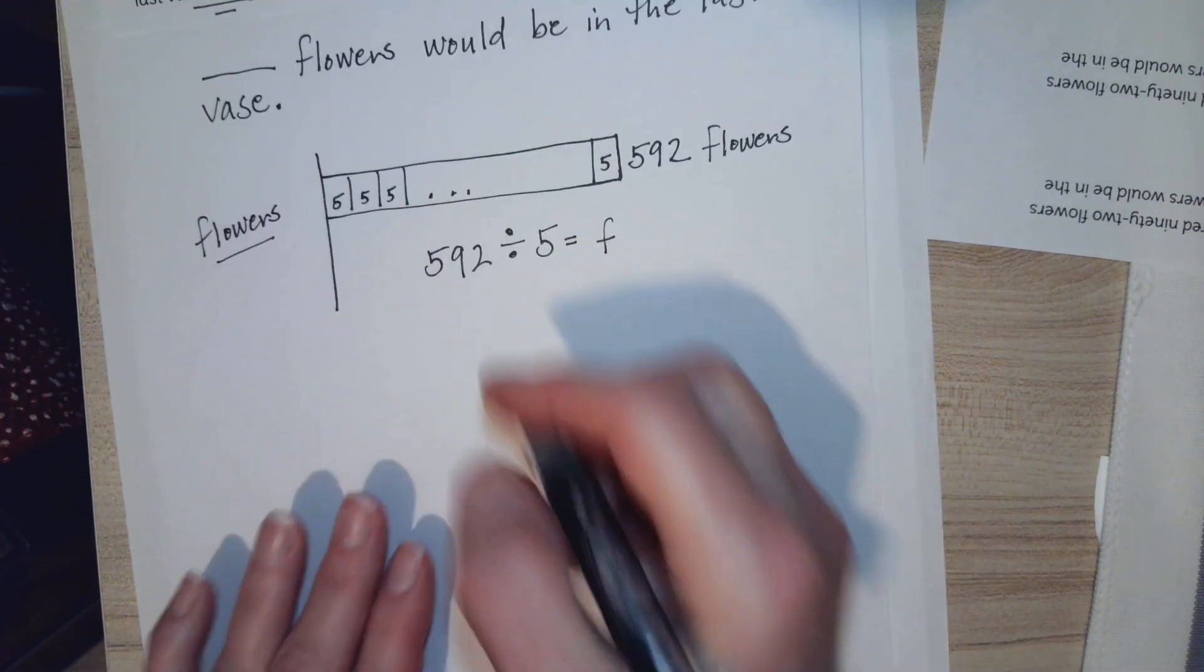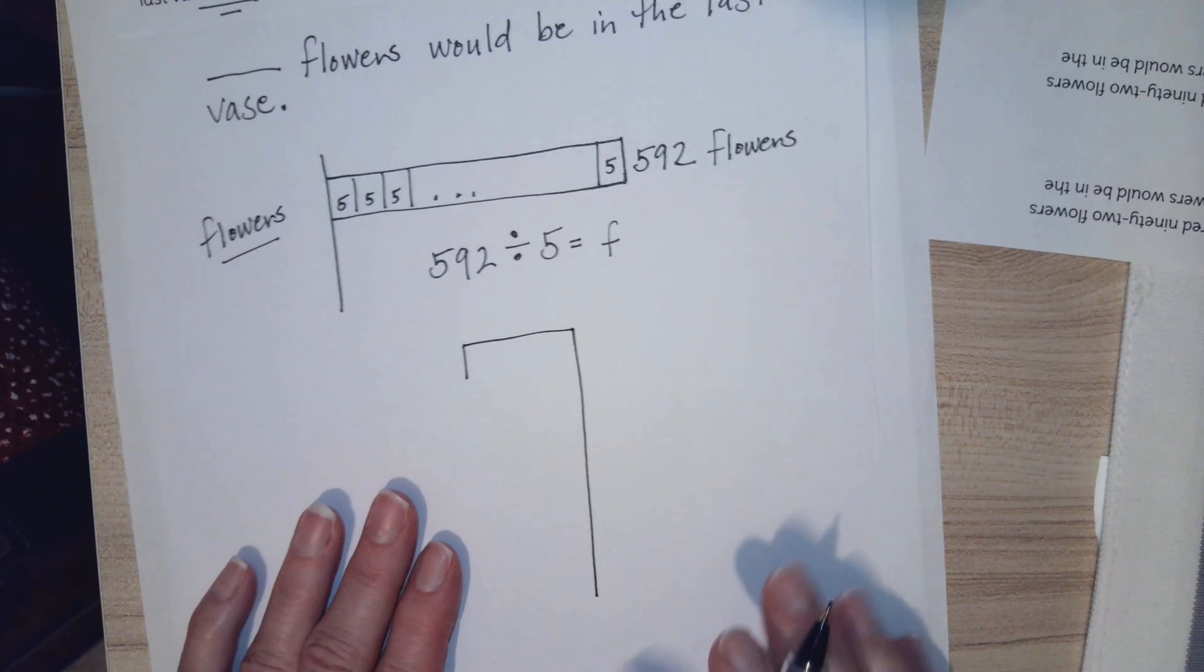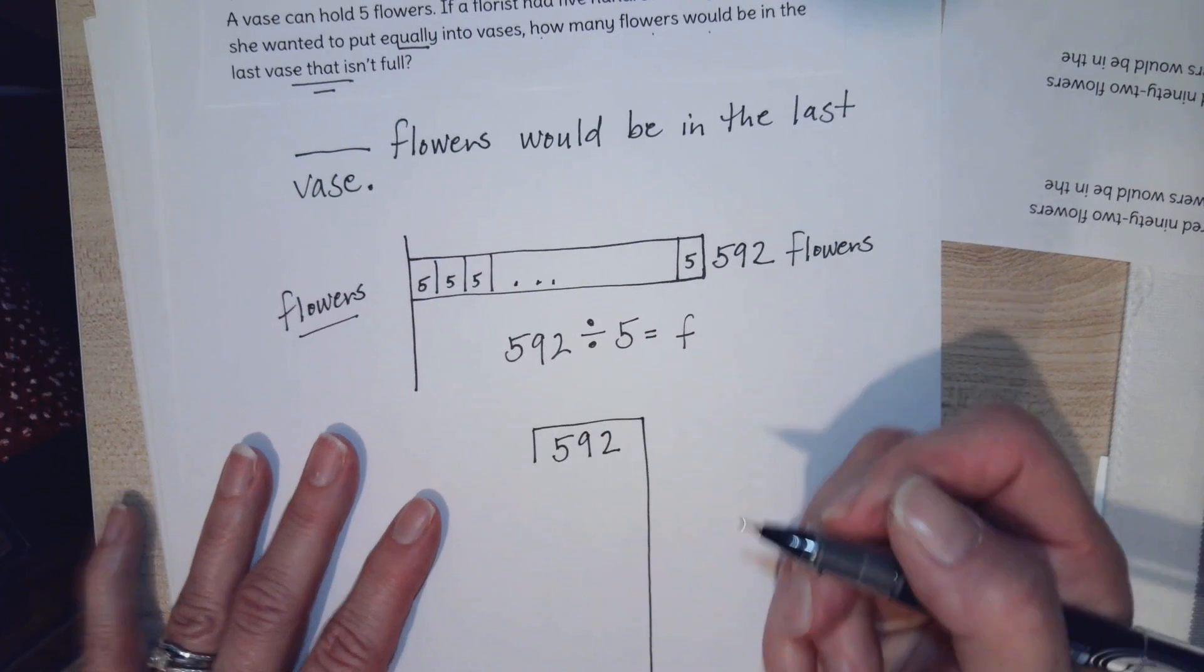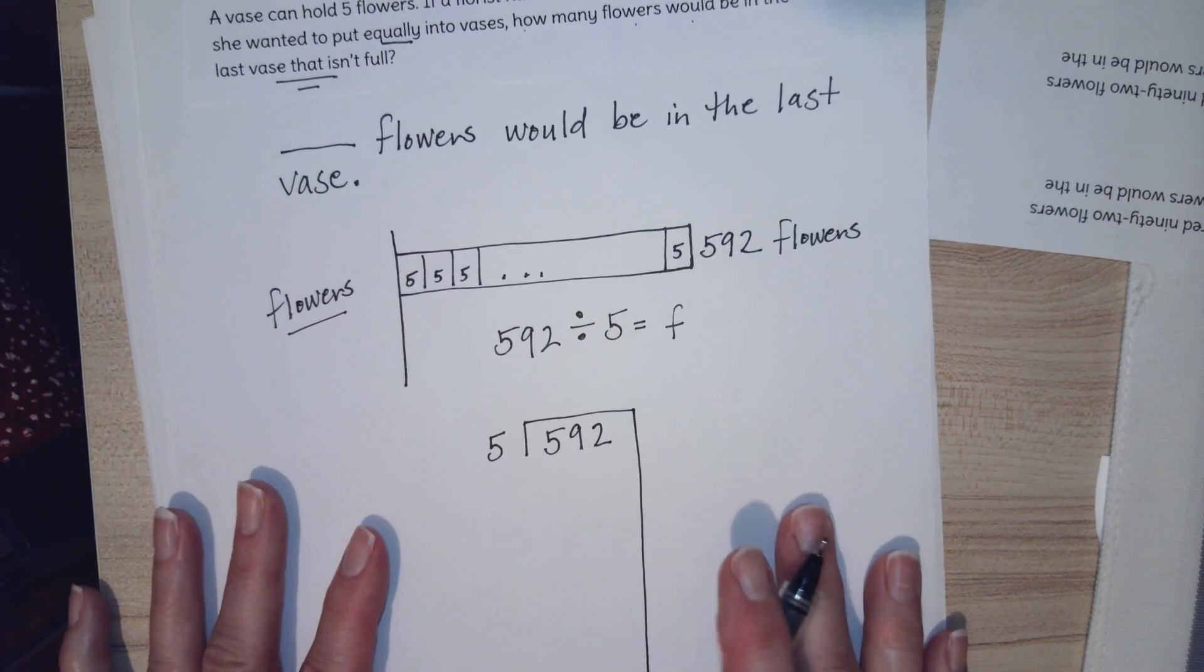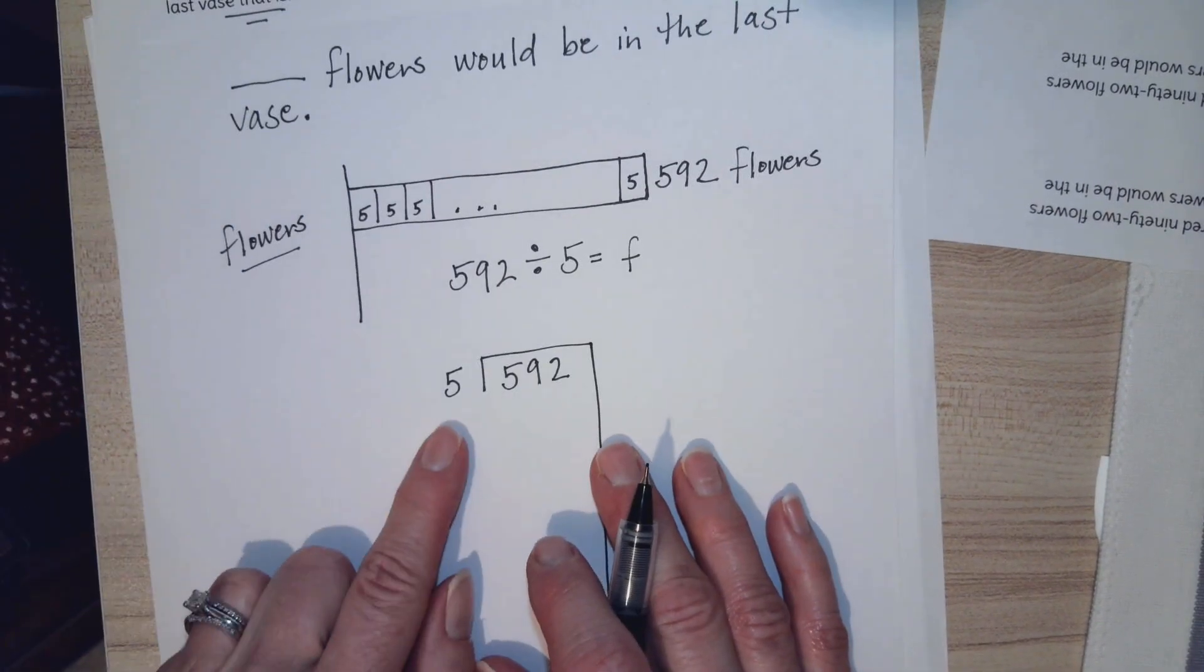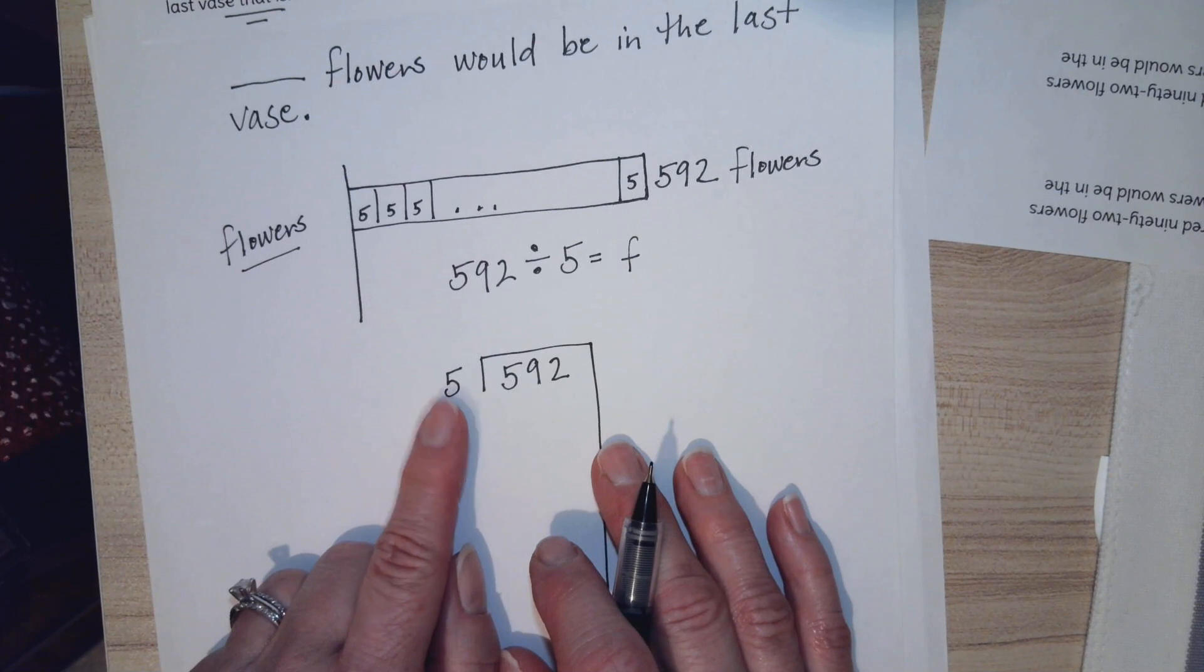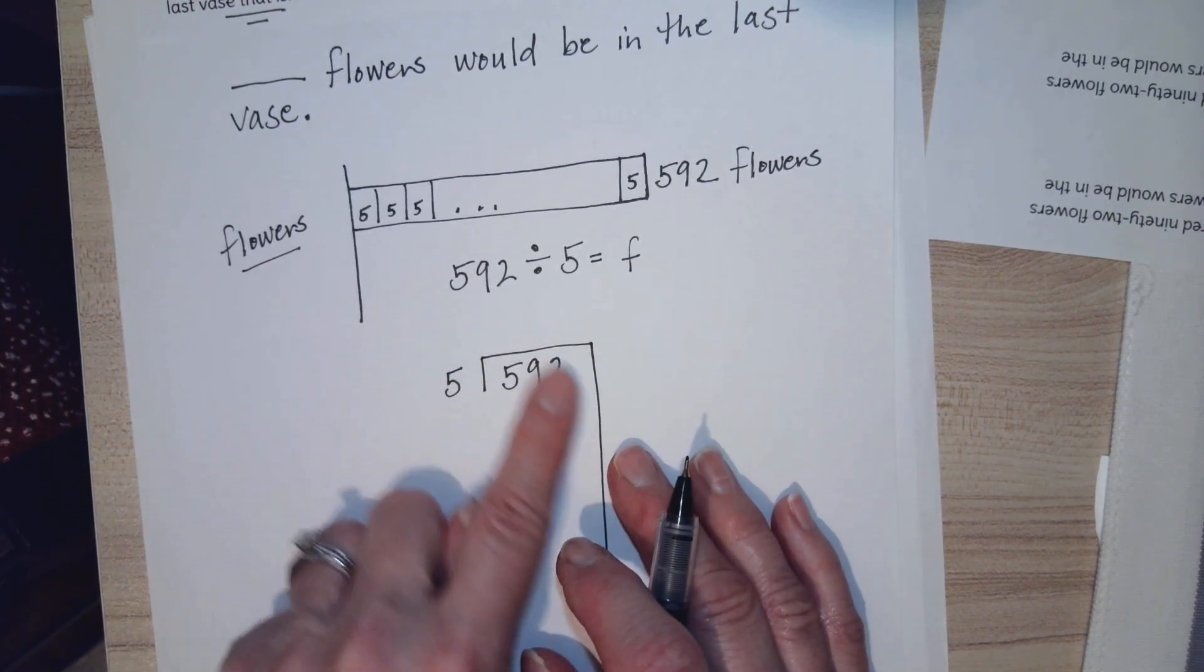So in order to do that though, I do need to divide. So I'm going to set up my problem. This is called my dividend, this is my divisor. I need to see how many fives will go into 592.